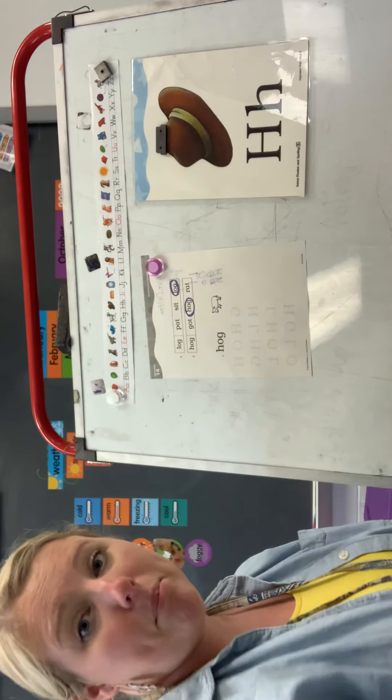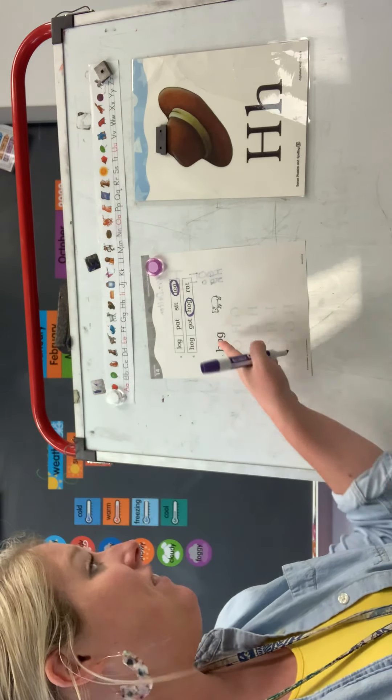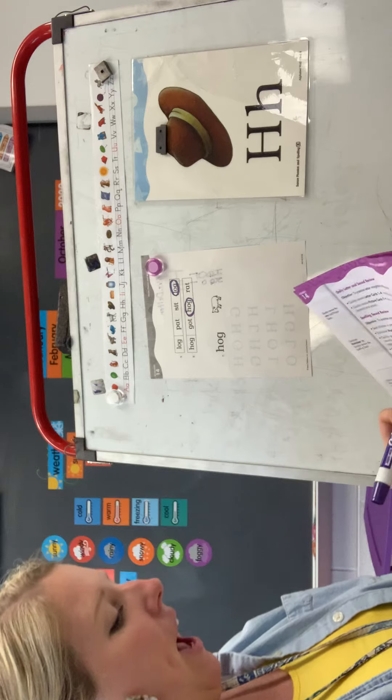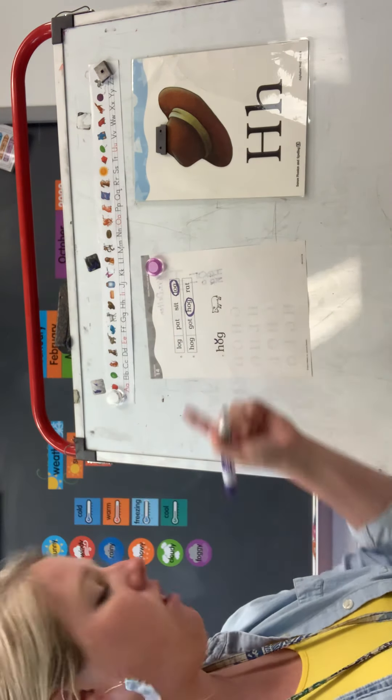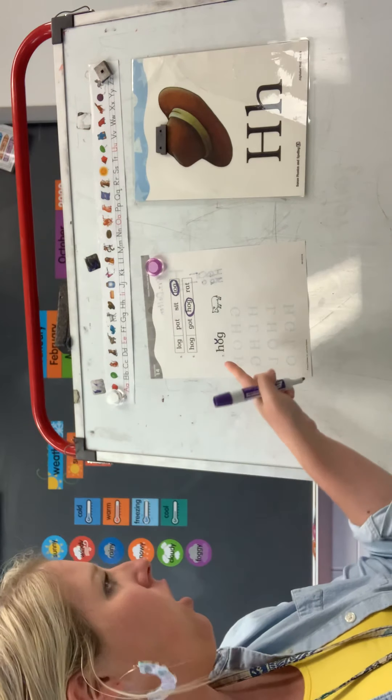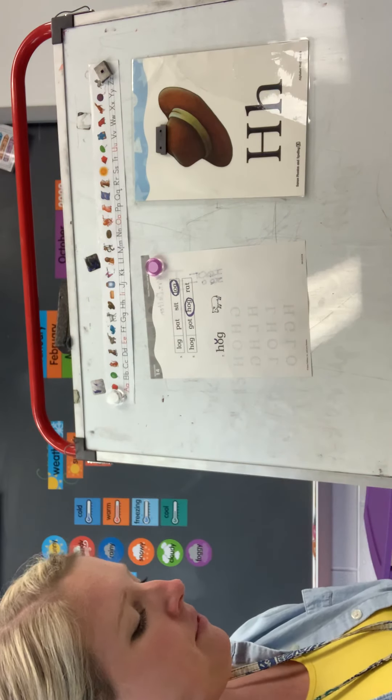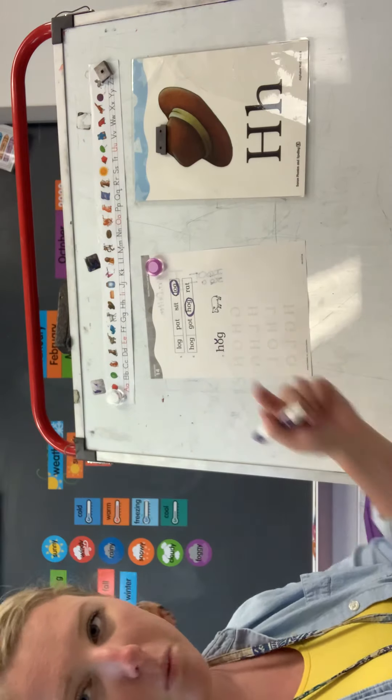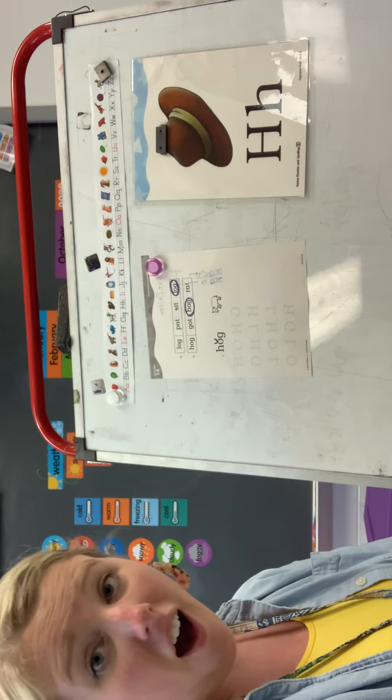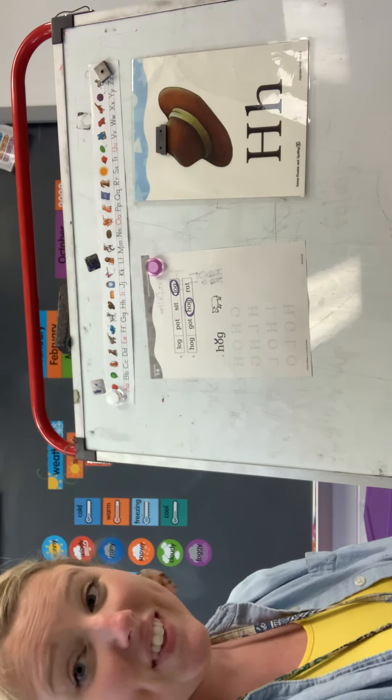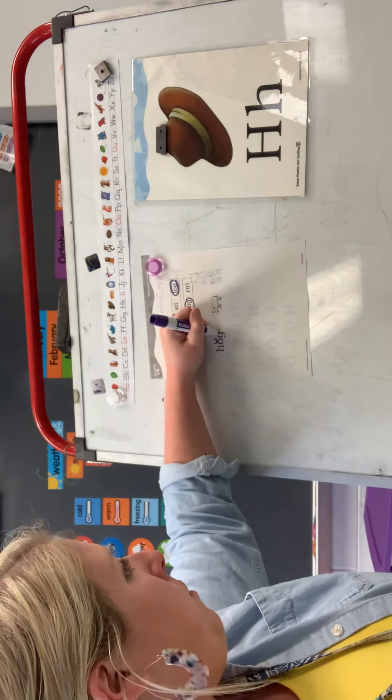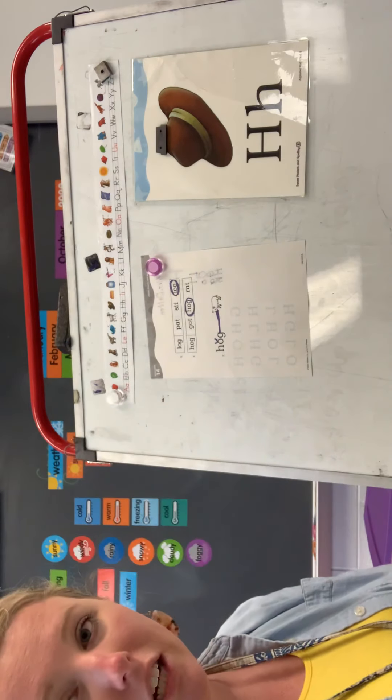Is there a consonant blocking it? Is there a consonant beside it? Yeah. So, I'm going to code it with a breve. Because it's followed by a consonant. So, that makes that O short. Can you read this word? What is this word? Hog. Just like we had up here. Do you see a picture of a hog?